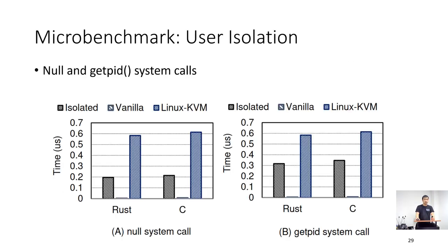To measure user isolation overhead, we measured the system call overhead. We measured null system calls to measure the pure isolation overhead, and getPID to measure the real-world overhead. The null system call is a system call that returns without doing anything. We measured the system calls in both Rust and C applications with RustyHermit and Linux. Our isolated system calls are slower than the vanilla function calls because of isolation overhead, but still faster than Linux system calls.